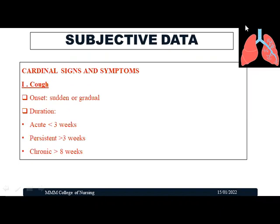In subjective data, we need to identify certain cardinal signs and symptoms specific to respiratory problems. The first cardinal sign is cough. When a patient comes with complaints of cough, we need to assess the onset — whether sudden or gradual — and duration. If it is acute, it is less than three weeks; if persistent, more than three weeks; if chronic, more than eight weeks.